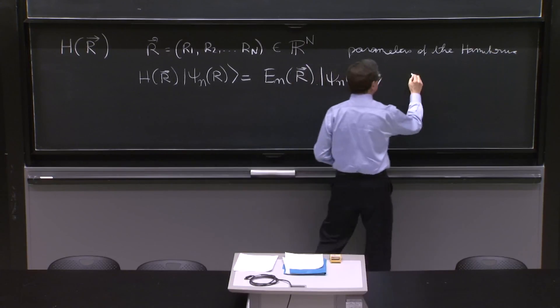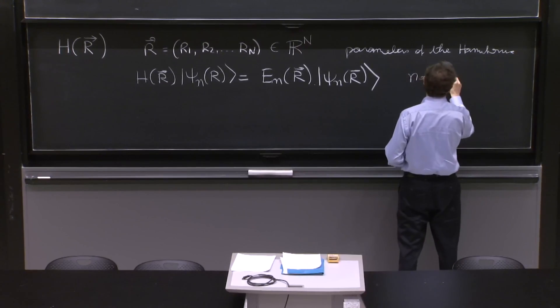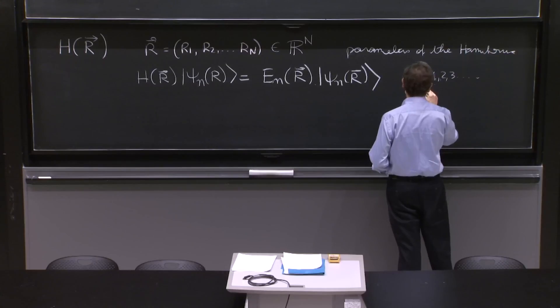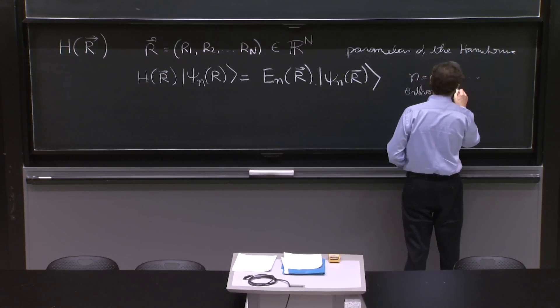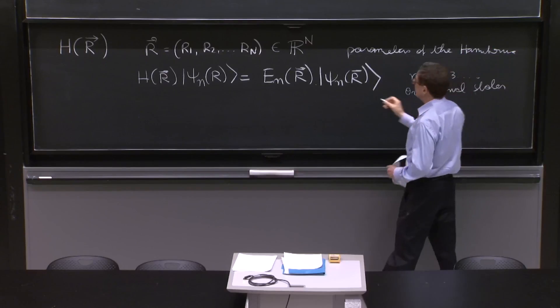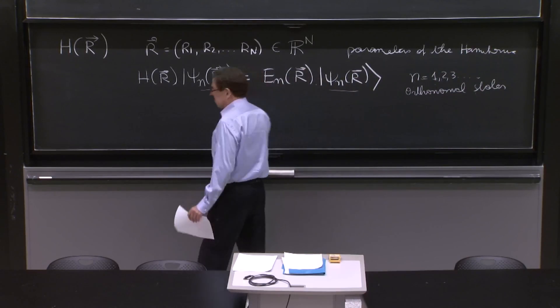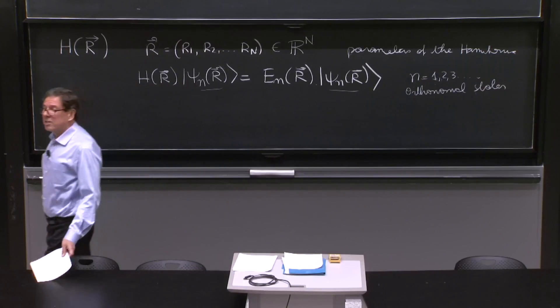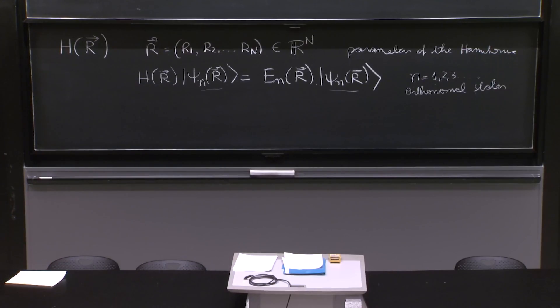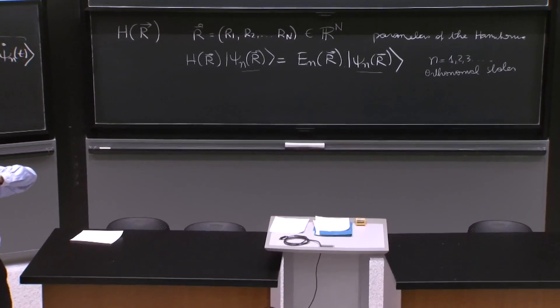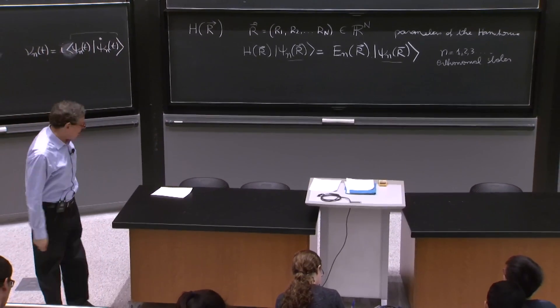And n maybe is 1, 2, 3, and these are orthonormal states, those energy eigenstates. So this equation says that you have been able to solve this Hamiltonian, whatever the values of the parameters are. And you have found all the states of the system. n equal 1, 2, 3, 4, 5, 6. All of them are now.